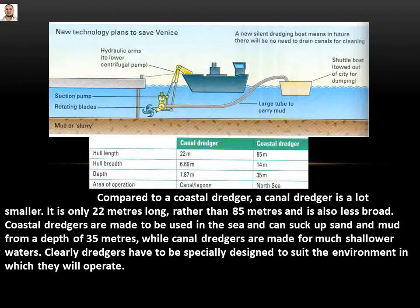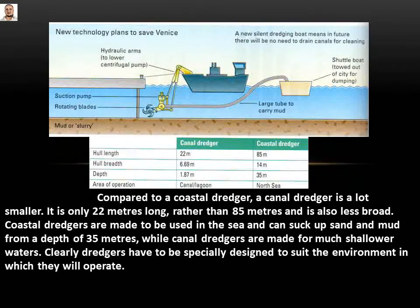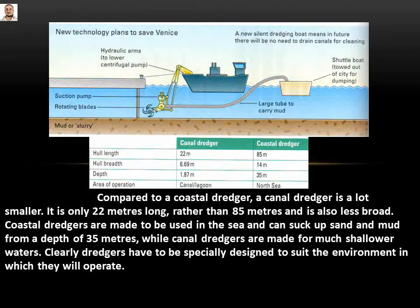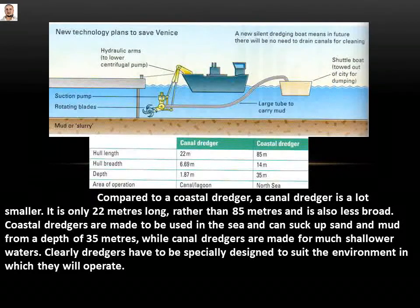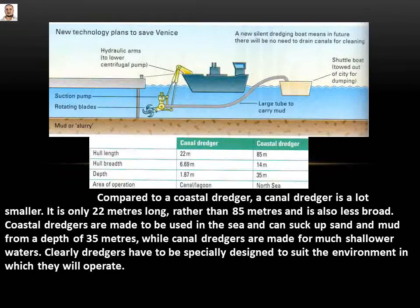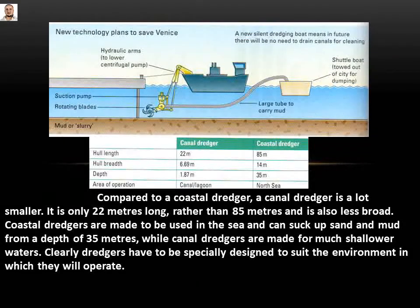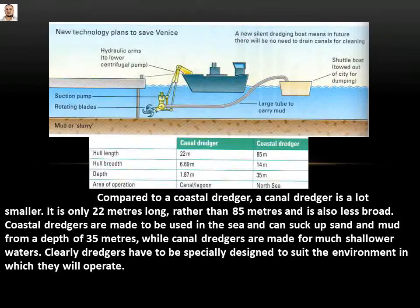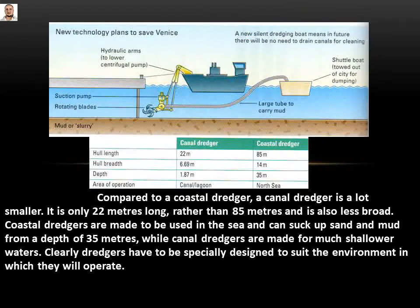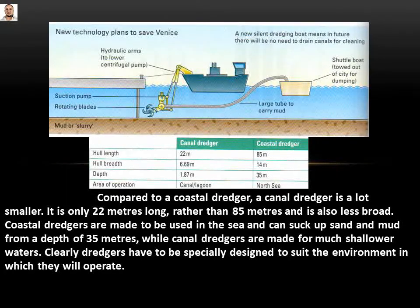When the shuttle boat is full of mud, it is towed away and the mud is dumped. Compared to a coastal dredger, a canal dredger is a lot smaller — only 22 meters long rather than 85 meters — and is also less broad. Coastal dredgers are made to be used in the sea and can suck up sand and mud from a depth of 55 meters, while canal dredgers are made for much shallower waters.